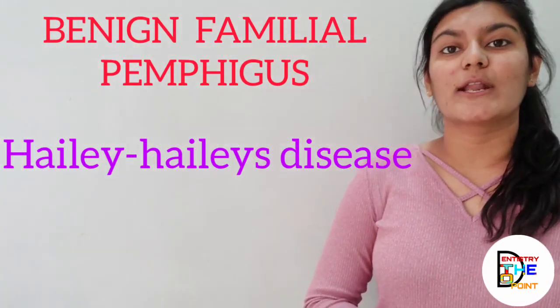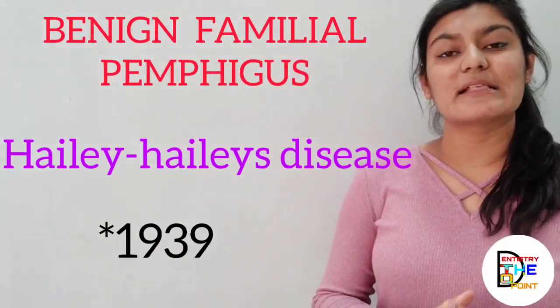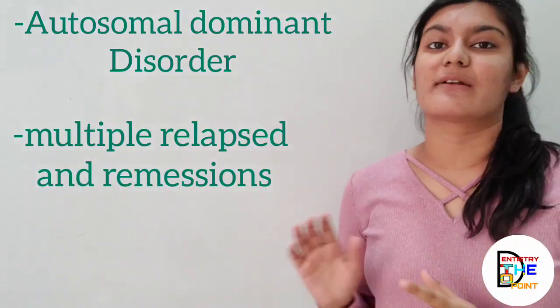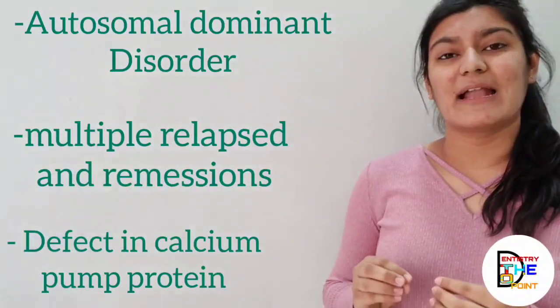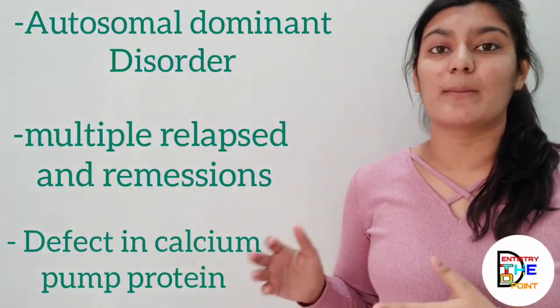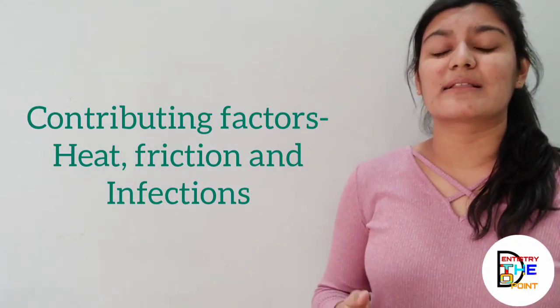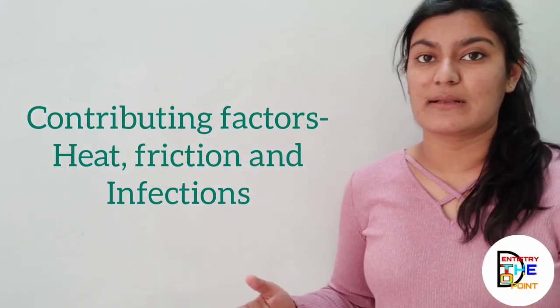Apart from the three main variants, there is another variant known as familial benign pemphigus or Hailey-Hailey disease, described by the Hailey brothers in 1931. It is an autosomal dominant disorder, and a history of multiple remissions and relapses is characteristic. The exact etiology and pathogenesis are not fully known, but it is hypothesized to result from a defect in the calcium pump proteins. Additional contributing factors such as heat, friction, and infections are also believed to exacerbate the disease.